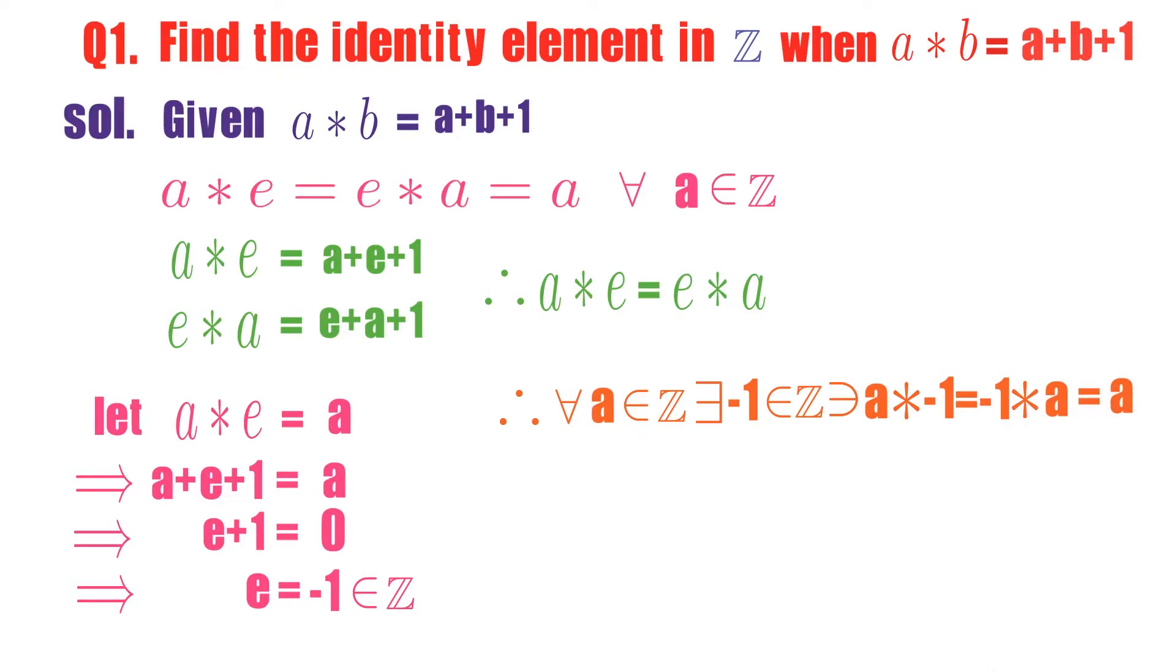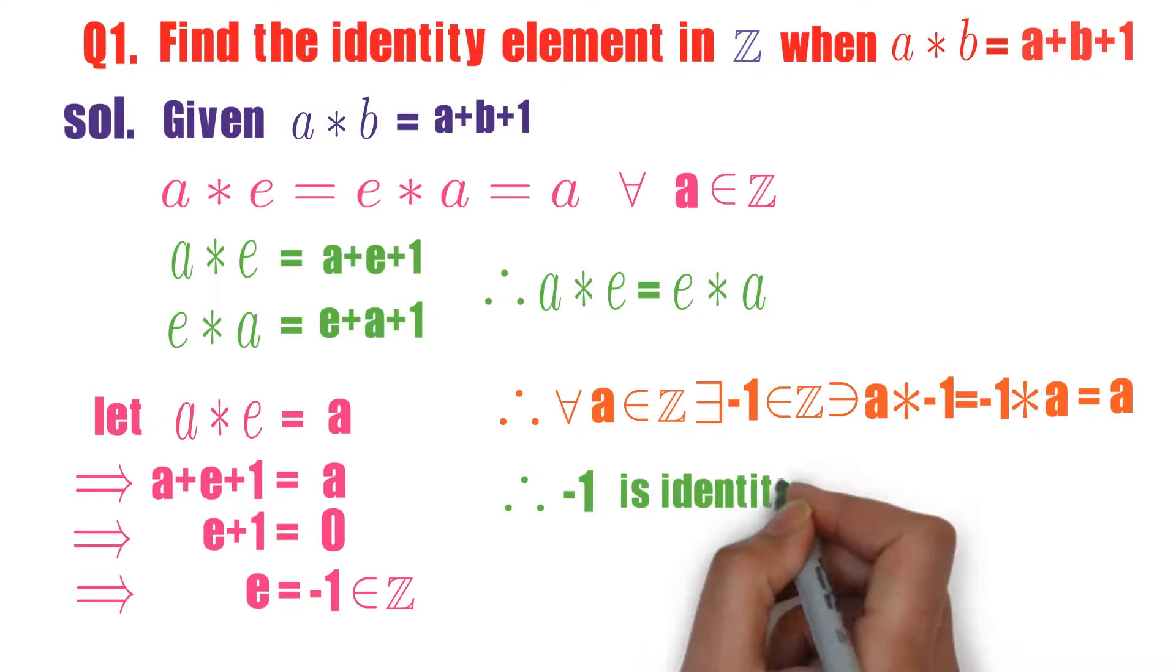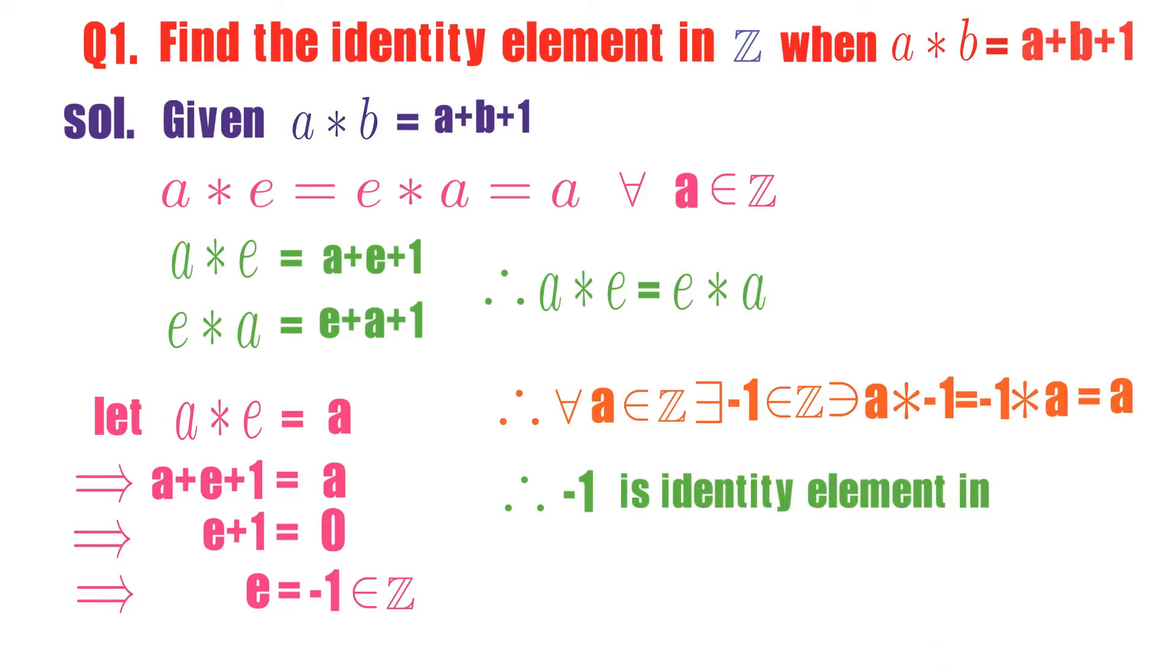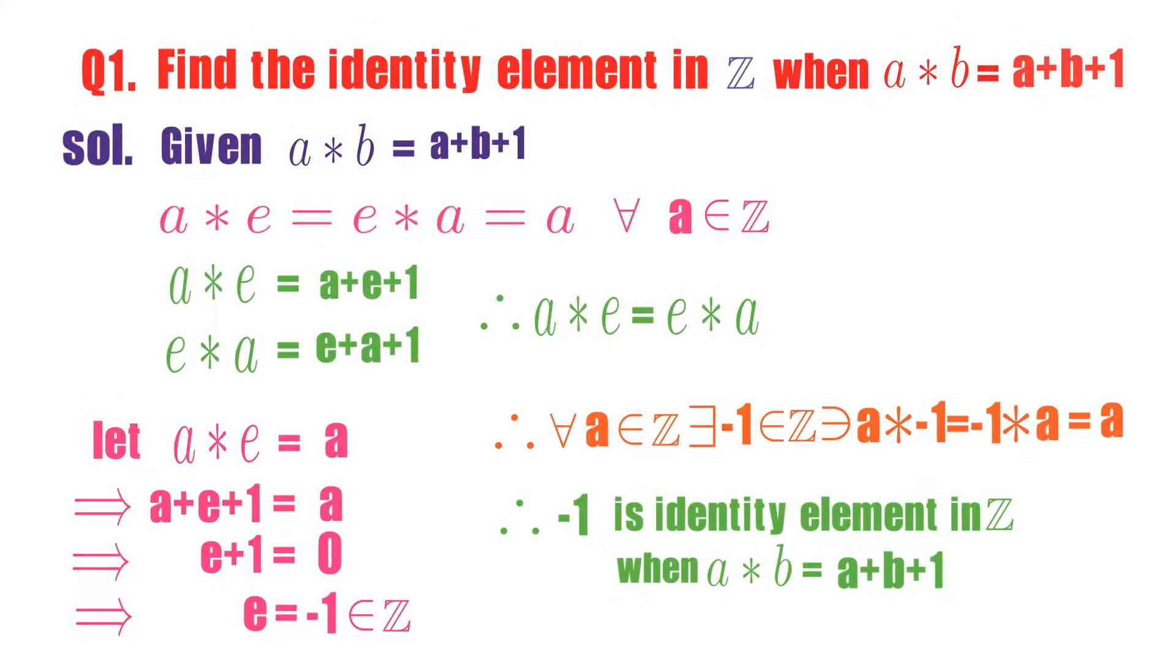It indicates that minus 1 is an integer, it is satisfying identity law. So minus 1 is identity element in Z when a star b is equals to a plus b plus 1.